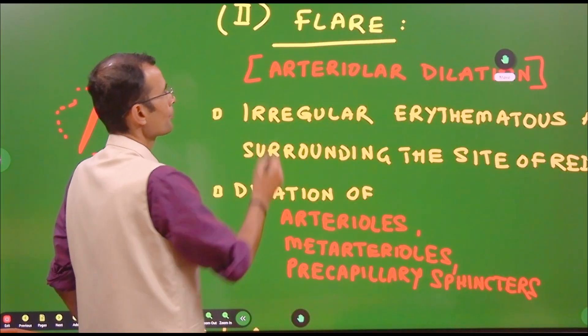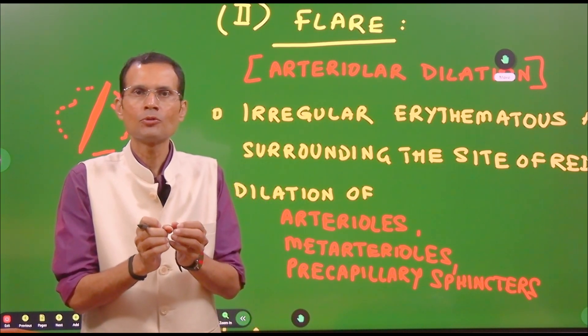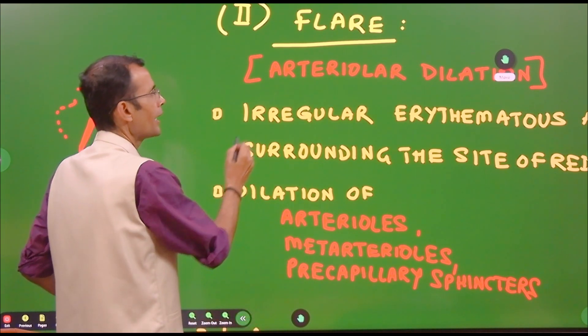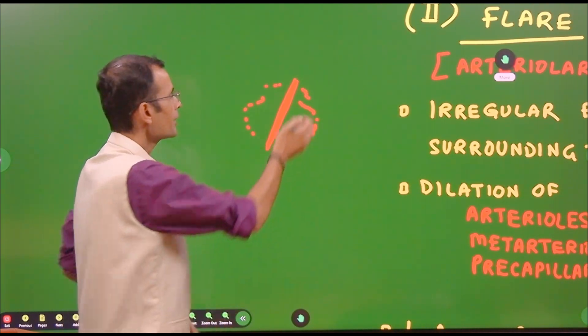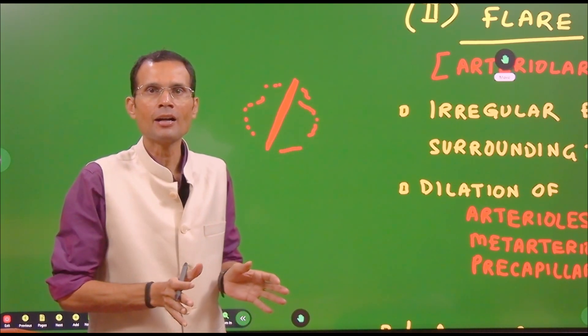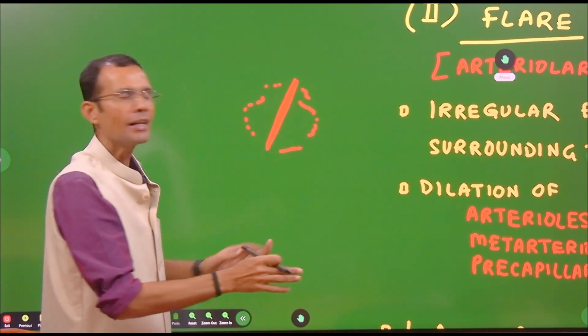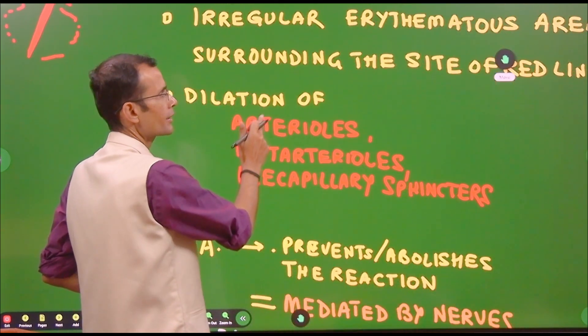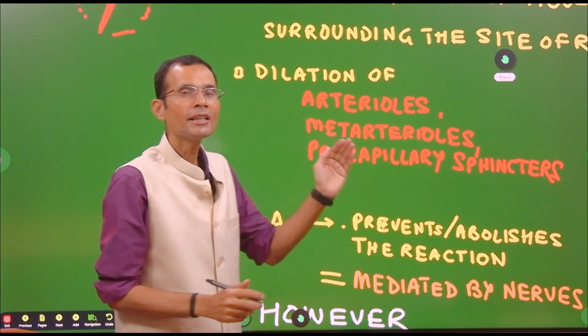But we will see the second reaction is definitely mediated by nerves. The second reaction in this triple response is the flare. Flare as we say flare up, spread or flare up. There is going to be flare up along or surrounding regions. There is red line and in the surrounding regions there will be an erythematous area created, a reddish erythematous irregular patch-like area. Erythematous irregular area surrounding the site of red line.